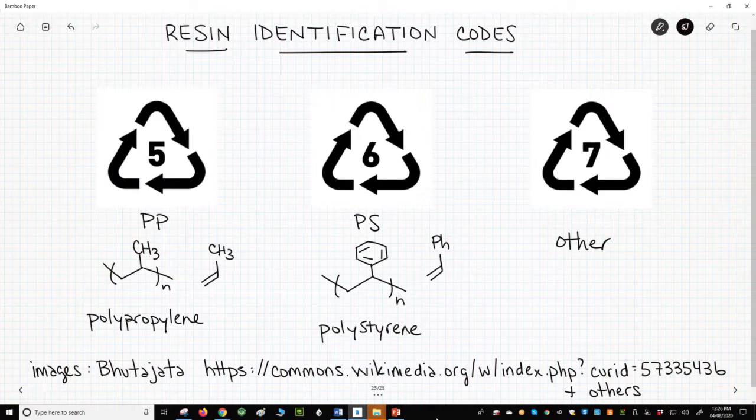Code number 7 is for other resins. This category includes many other polymers. Examples include nylon and polycarbonate, the condensation polymers aside from polyester, which is normally polyethylene terephthalate covered under code 1.